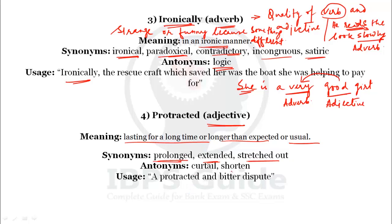Antonyms of protracted: shortened and curtailed — things that are made smaller or shorter. Example use: 'A protracted and bitter dispute' — the dispute is very long, protracted, and there is no good relation; it is very bitter. So protracted means lasting for a long time, longer than expected.